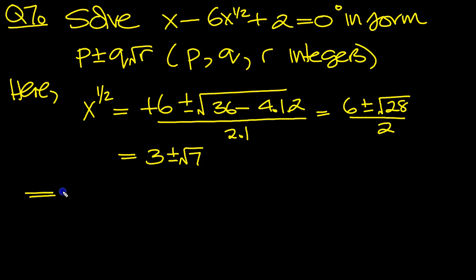So square both sides then. x is equal to 3 plus or minus the square root of 7 squared, which is equal to, let's square it then.